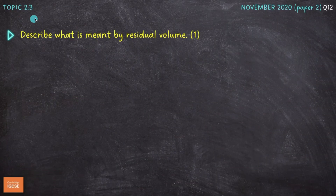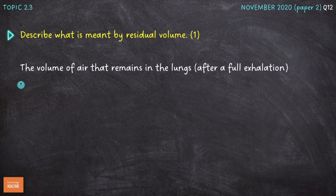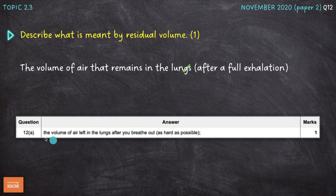Question number one is on topic 2.3. If you head down to the description, you can find links to the short summary videos containing everything you need to know on Chapter 2. Describe what is meant by residual volume for one mark. Residual volume means the volume of air that remains in the lungs after a full exhalation or out-breath. The mark scheme says: the volume of air left in the lungs after you breathe out as hard as possible.